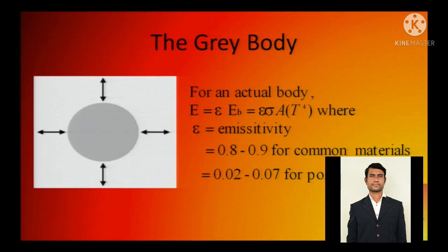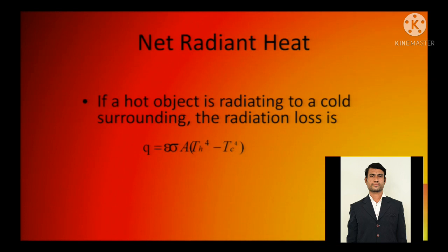The grey body - now the grey body has to have this emissivity because it is not a perfect black body, that was for a perfect black body. So you just need to multiply emissivity to the Stefan-Boltzmann radiation. Emissivity are of this range. Net radiant heat: if a hot object is radiating to a cold surrounding, the radiation loss will be emissivity, Stefan-Boltzmann constant, area hot to the power 4 minus cold to the power 4, as we all know that Q equals sigma A T to the power 4. So if we need to have net, it is Q sigma A delta T to the power 4, and delta T to the power 4 means T1 to the power 4 minus T2 to the power 4 - it is not T1 minus T2 to the power 4.